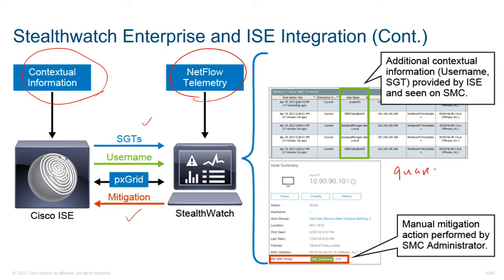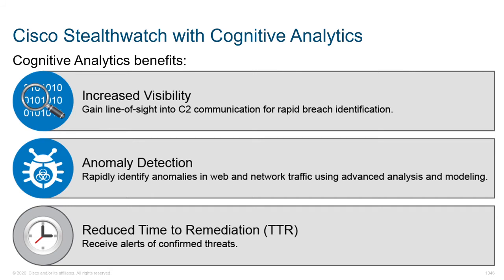When Stealthwatch detects something, it can notify ISE, and then ISE can quarantine it. We can also assign a quarantine security group tag via pxGrid, which is a framework supported in version 6.9 and later. If we wanted to manually mitigate, administrators can also do that. Essentially, we have mitigation where we can quarantine a particular host directly from the SMC using endpoint protection services.